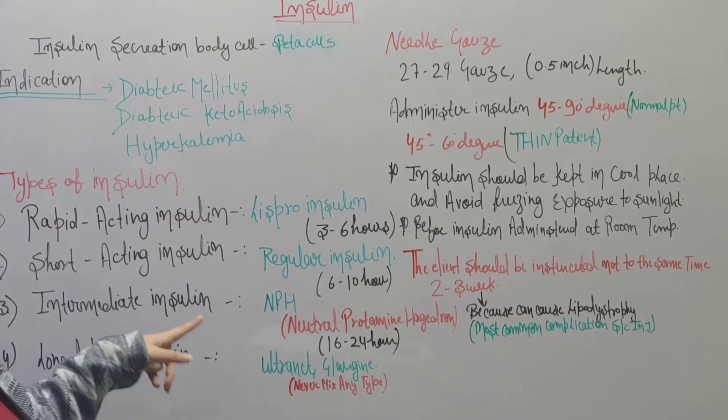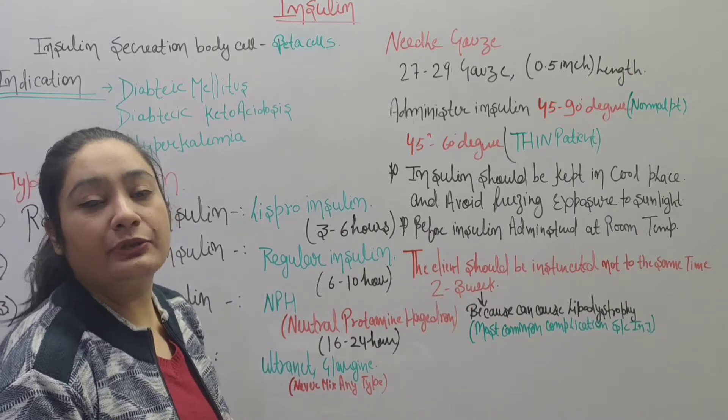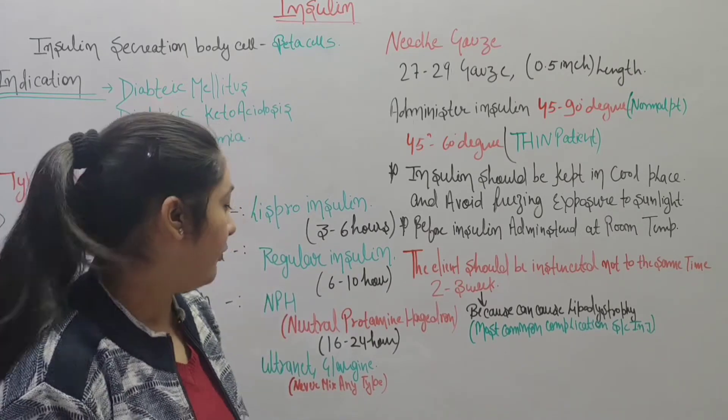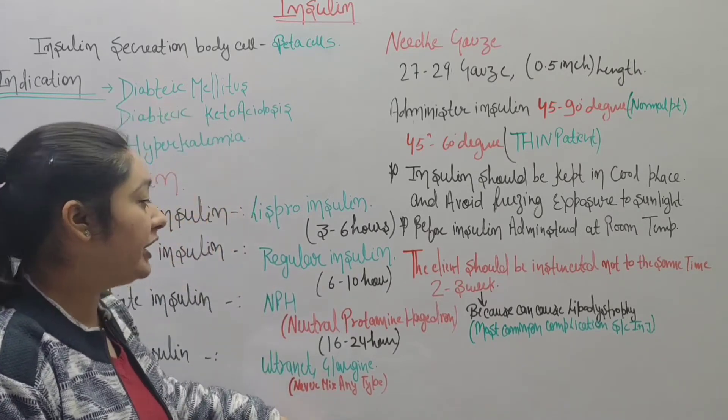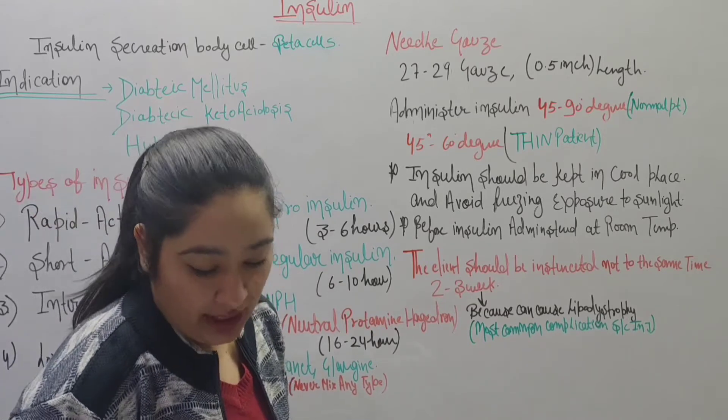The fourth type is long-acting insulin, also called ultralente insulin. Its duration of action is 18 to 24 hours.